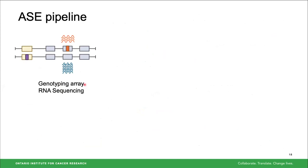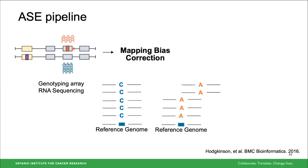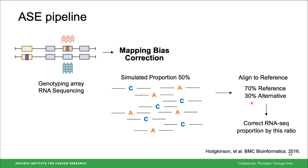To go over the ASE pipeline: we start with genotyping data to identify heterozygous positions. Since we're looking for an imbalance of alleles, we need only positions with two alleles — the heterozygote. We then look for those same positions in the RNA sequencing data to gain expression information. Next, we correct for mapping bias, a known and important bias in RNA sequencing, where the non-reference allele has a lower probability of correctly mapping to the reference genome. We correct for this using a method developed in our lab in 2016 by Alan Hodgkinson, which simulates a 50/50 read ratio at every position, maps those to the reference genome, identifies deviations from 50%, and corrects for them in the RNA sequencing data.